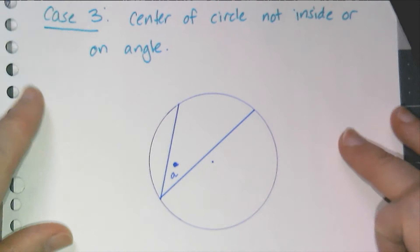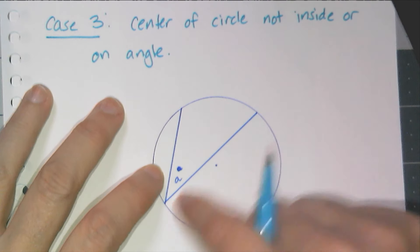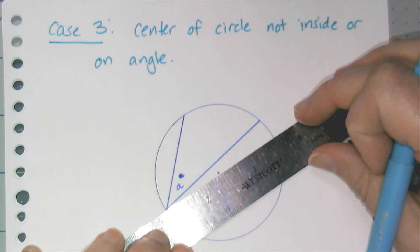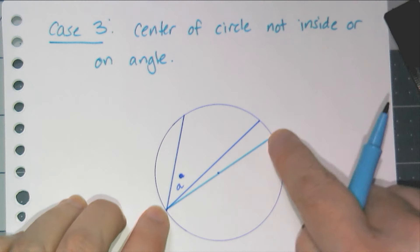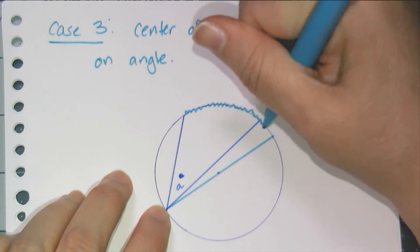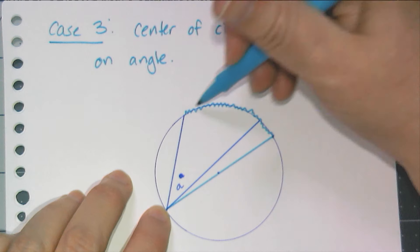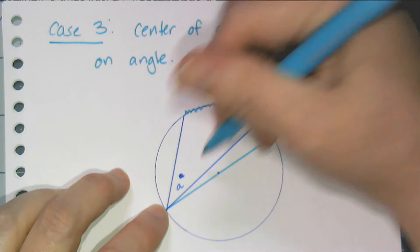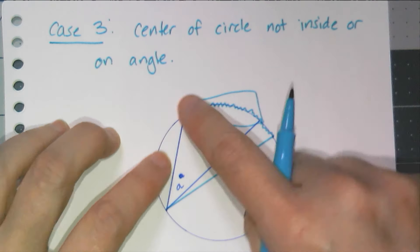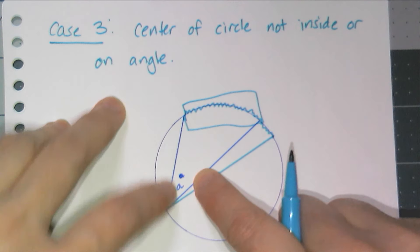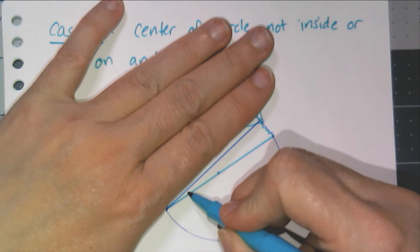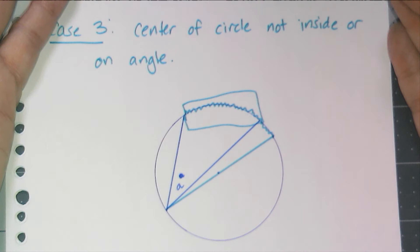Case three is going to be when the center of the circle is not inside or on the actual angle itself. And I'm going to do the same thing. I'm going to draw that diameter in to create case one. So now with that diameter drawn in, I can use case one to figure out this whole big angle related to this whole big arc here. And so, but I only want this piece of it here, right? I only want this section of it. So what I can do is I can use case one to show that this angle is half of this whole big arc. And then I can use case one again to find out that this angle is half of that arc. And then just subtract them to get the one I need.